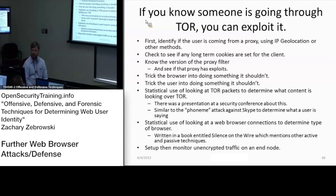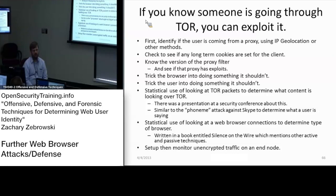Of course, the other thing you could do is really cheat — set up an endpoint for Tor and monitor all the traffic. You would be able to see everything for anyone that exits Tor through your exit node. Unfortunately, because Tor is run through volunteers, you just have no idea where Tor is actually exiting out when you use it.